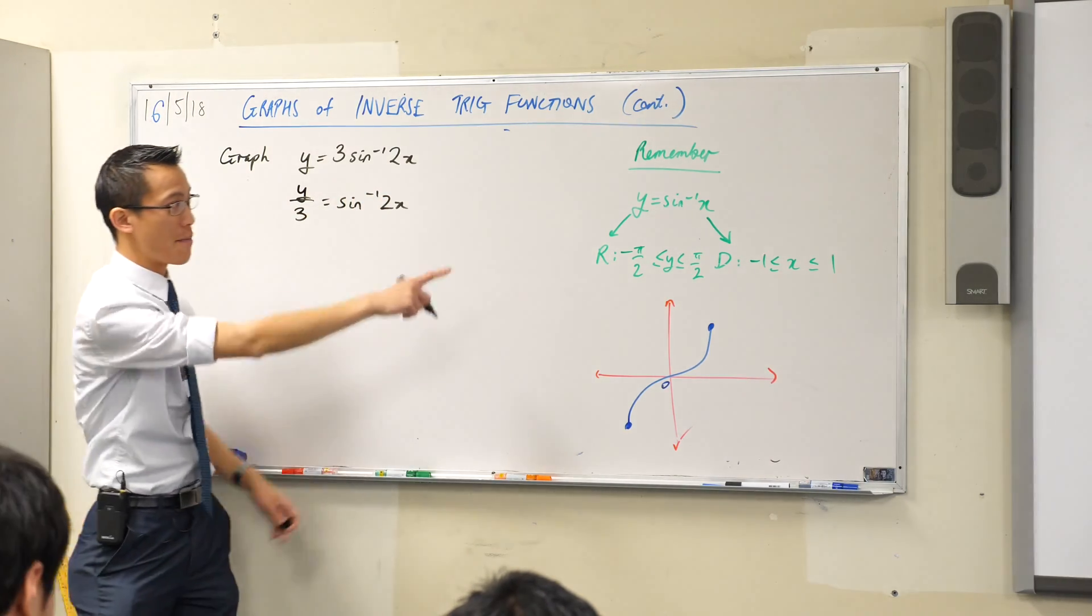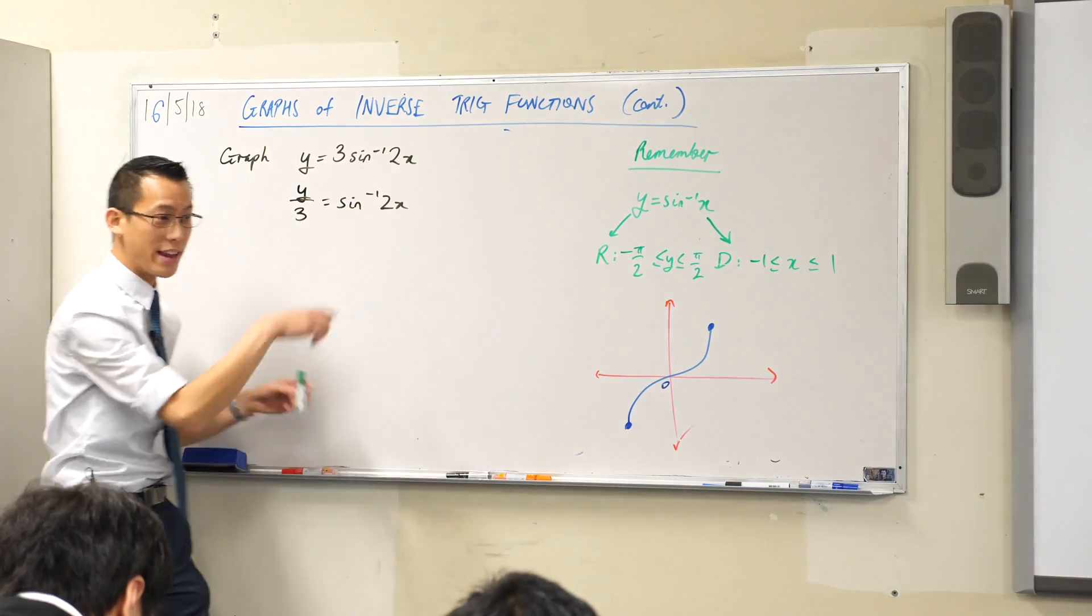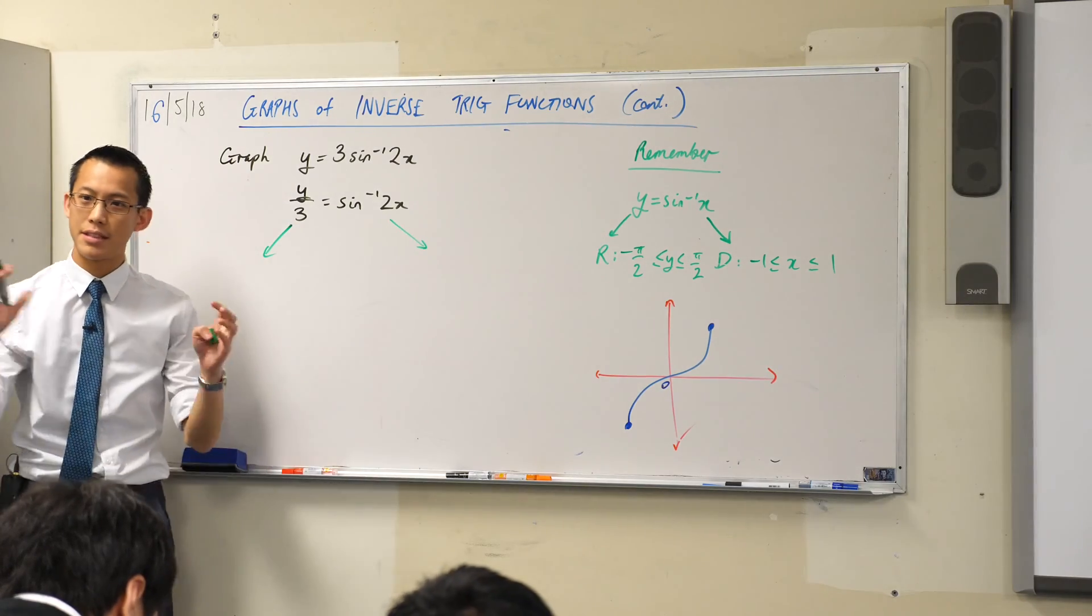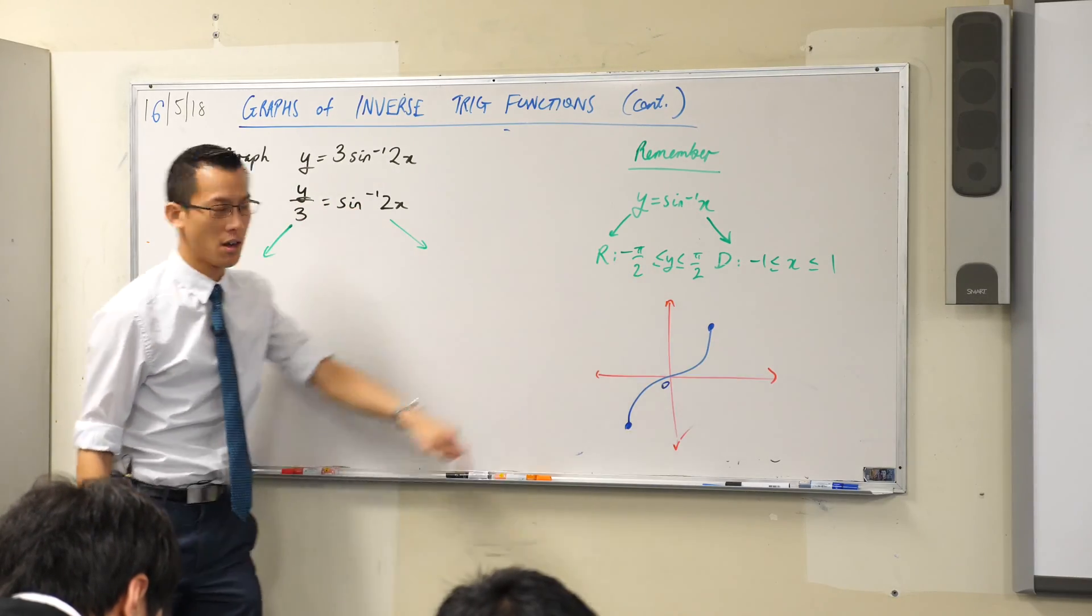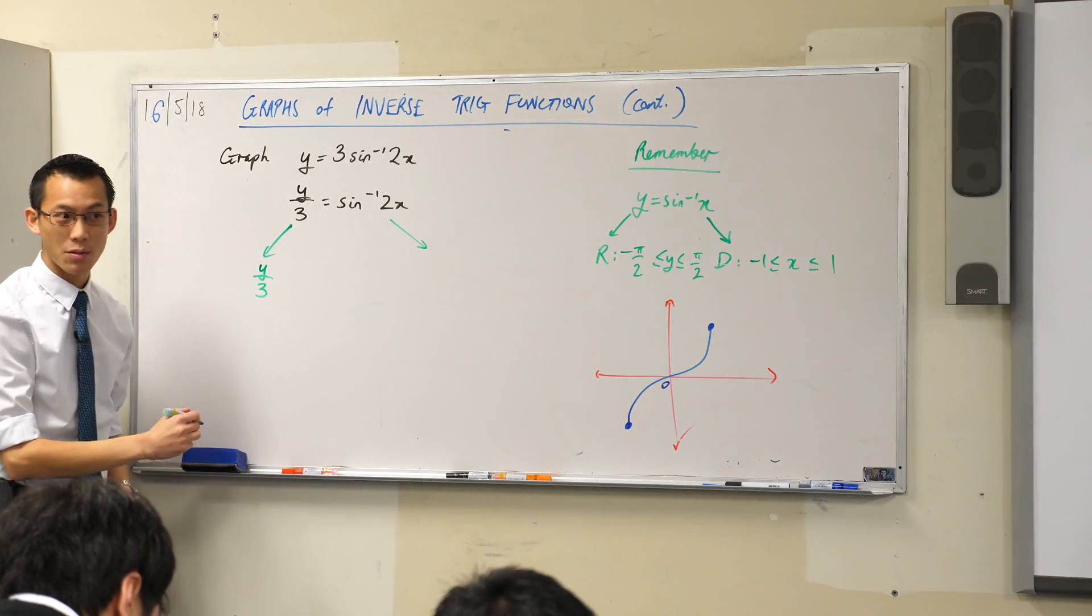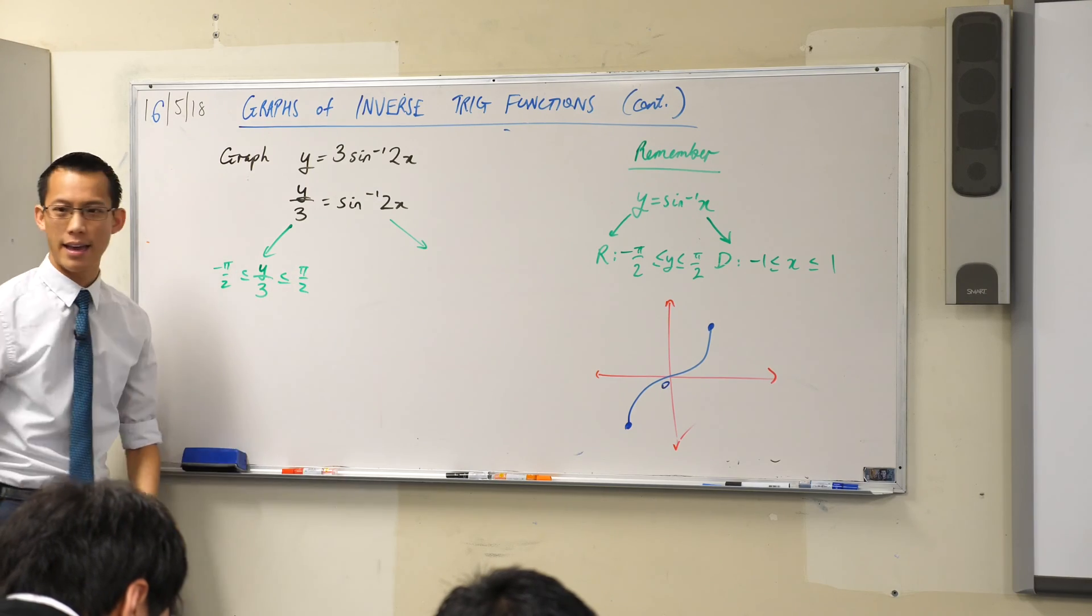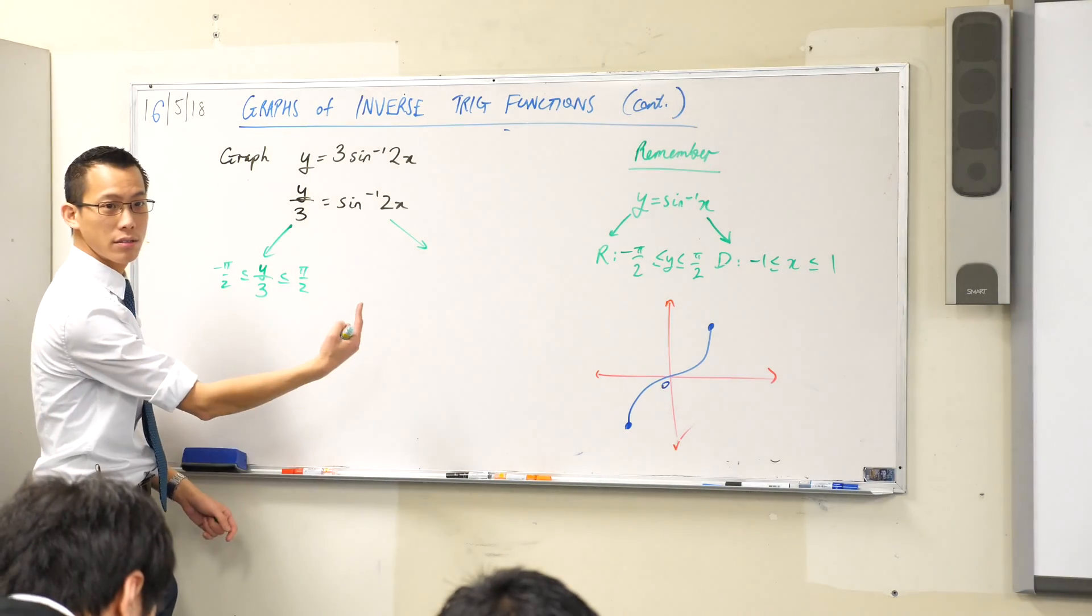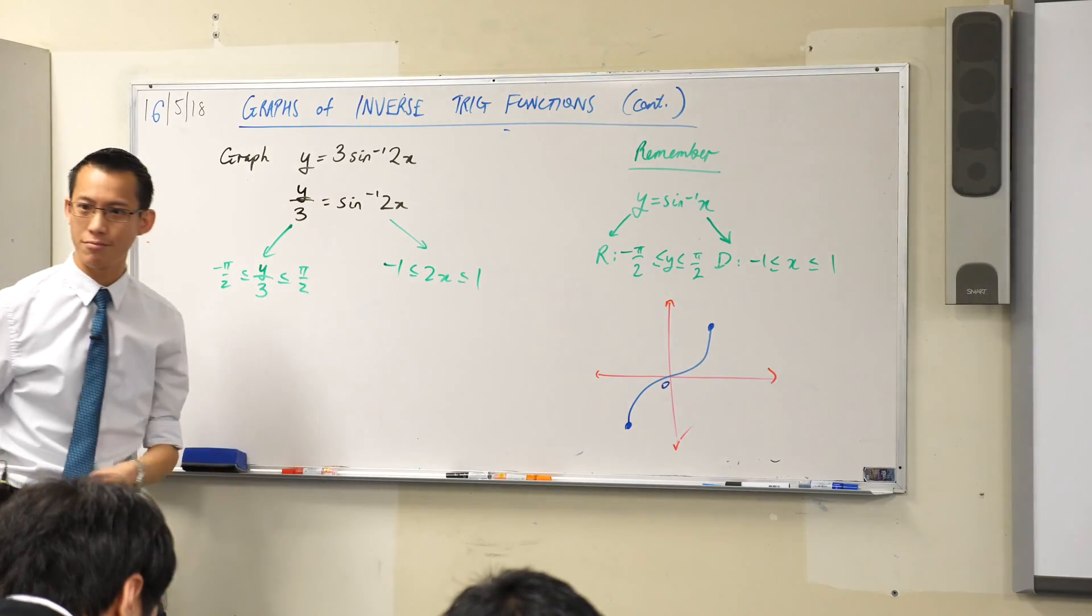Now, you see how I got range and domain out of the y and the x? Well, this is sine inverse, just like that is, so I can get the range and the domain out of these guys. But the difference is, I don't have y between negative pi on 2 and pi on 2. I've got y on 3. That's what exists between negative pi on 2 and pi on 2. And in the same way, I don't have x between negative 1 and 1, I've got 2x. So that's what I'm going to write, like so.